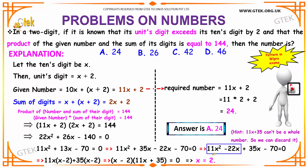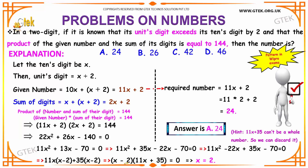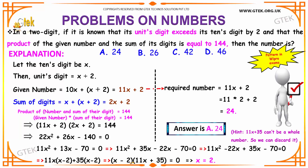You can take 11x as common among the first two terms and you can take 35 as common in the last two terms. Take them outside: you get 11x into (x minus 2) plus 35 into (x minus 2), which is (x minus 2) into (11x plus 35) is equal to 0. From this equation, x can have two values: x is equal to 2, or x is equal to minus 35 by 11. Since 35 by 11 cannot be a whole number, we discard it.